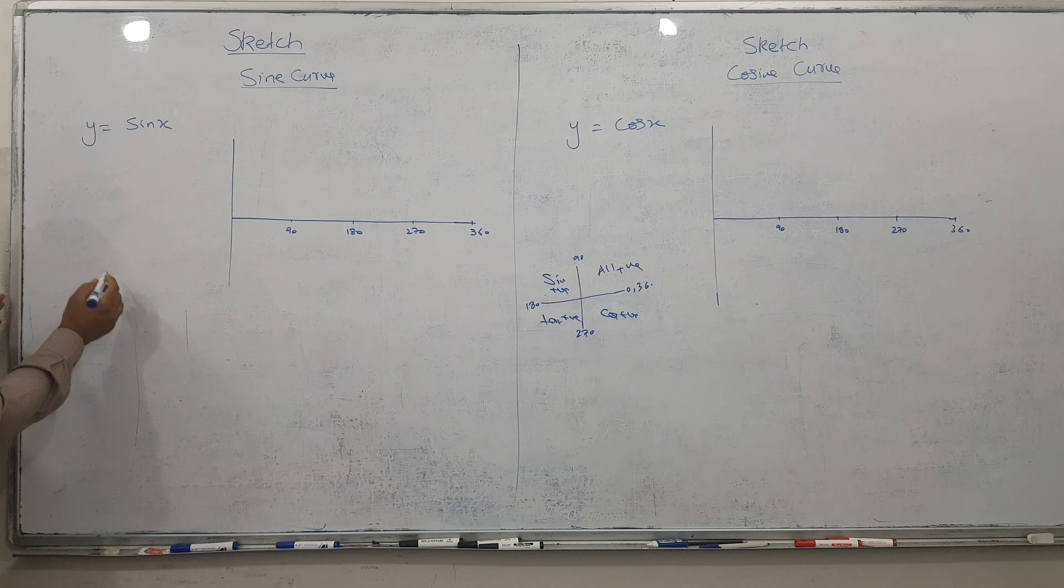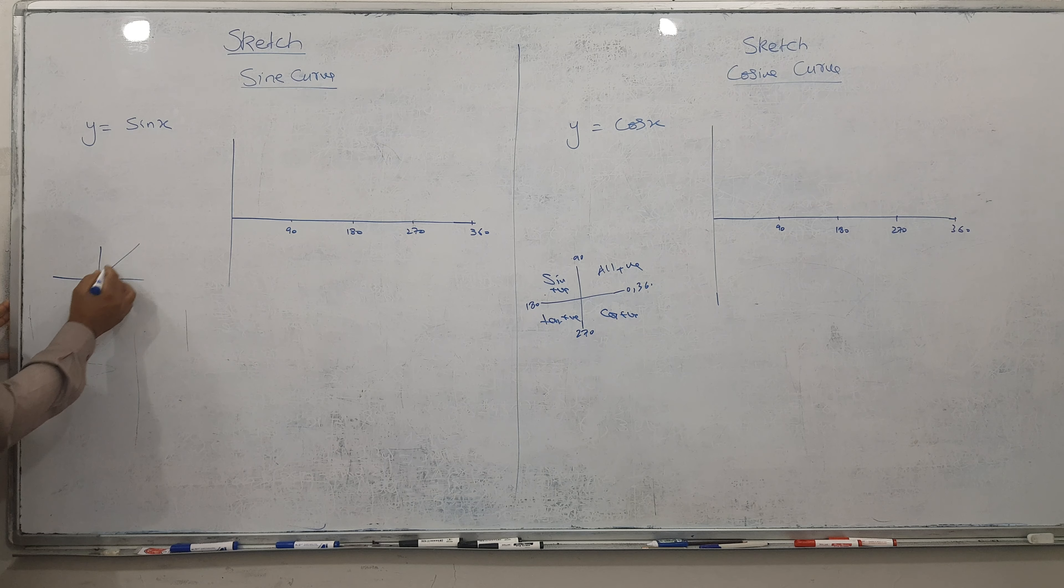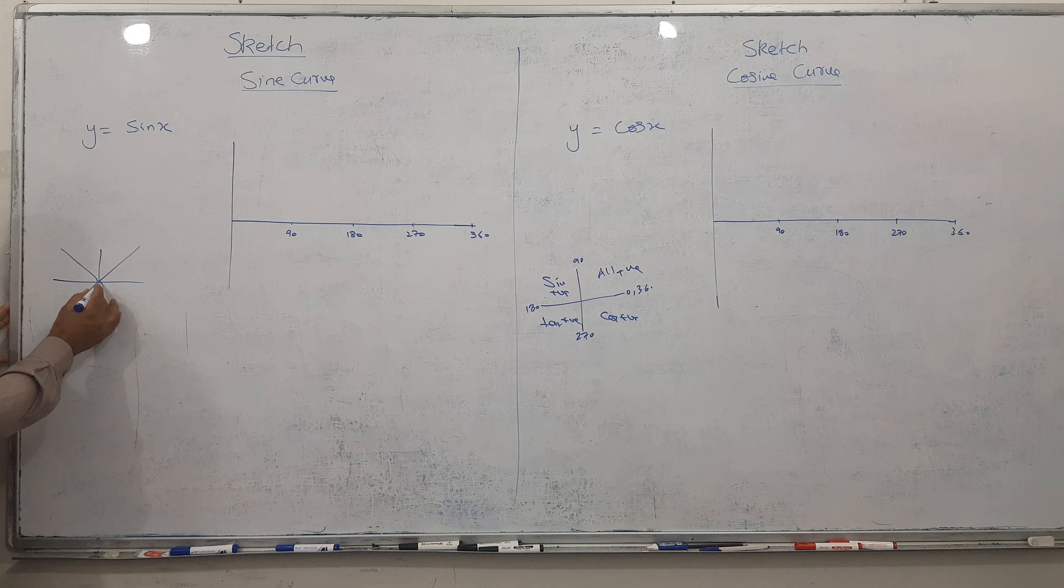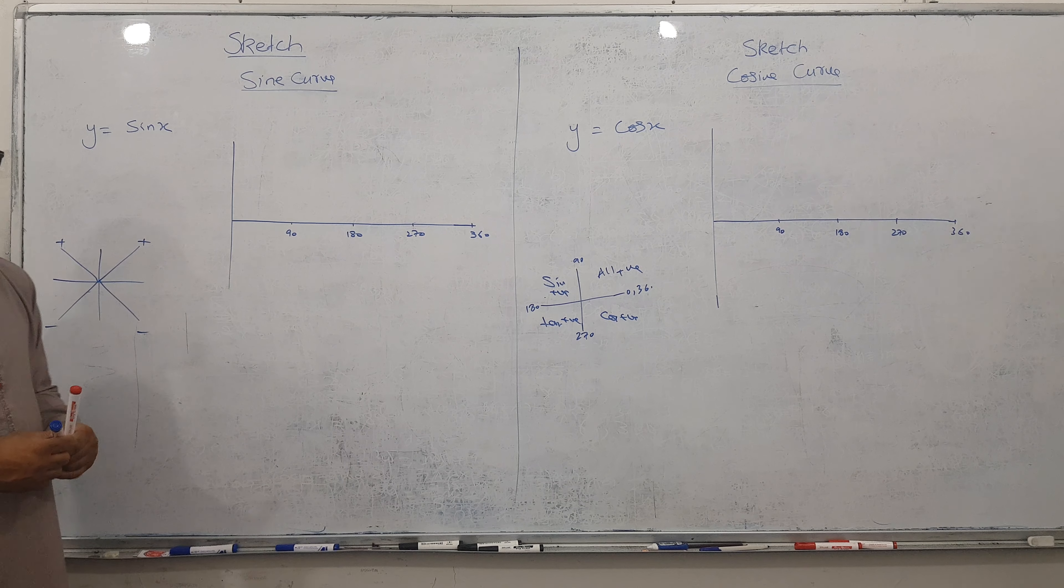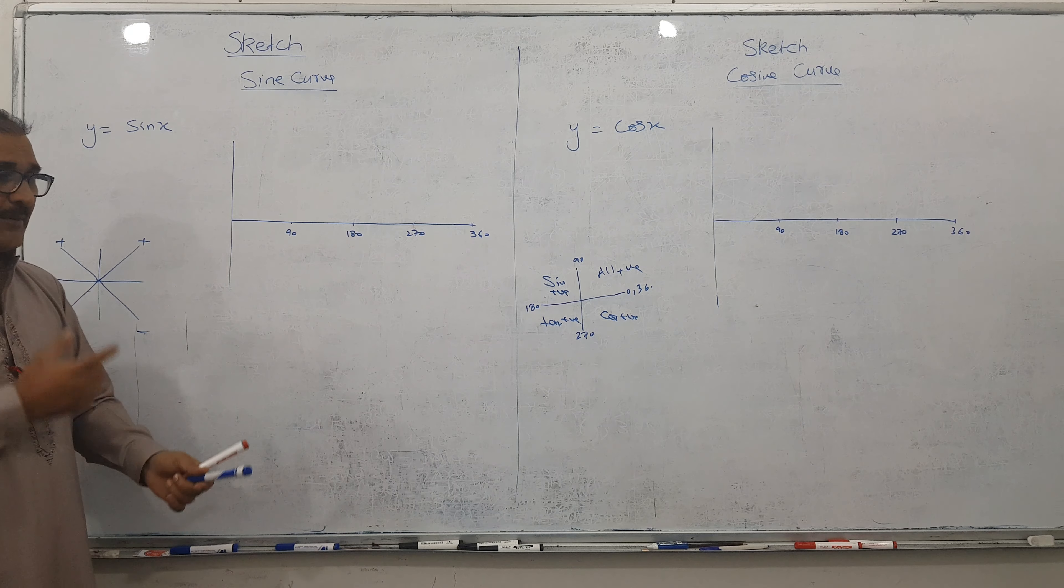Actually let me make a diagram for sine. So sine is here positive, here positive, here negative, here negative. So here positive, here positive, here negative, here negative. And that is why when I make it, you will see.